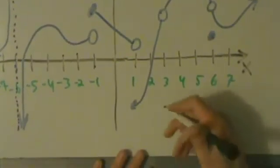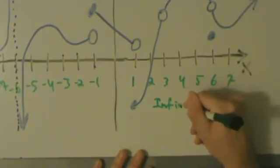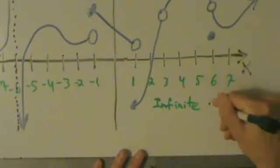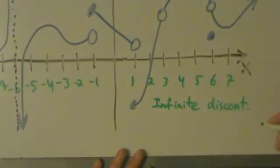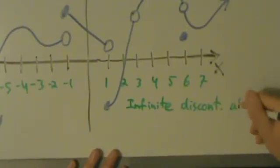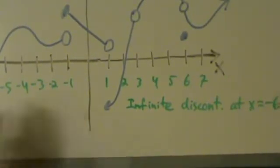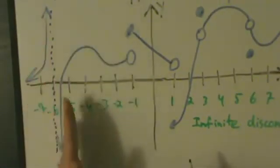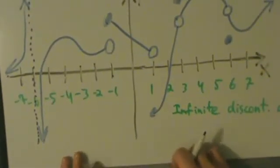So we can come down here and say we have an infinite discontinuity, let's just say DISCONT for short, at x equals negative 6. Okay? So we have this vertical asymptote at negative 6 here, at x equals negative 6. So that's an infinite discontinuity.